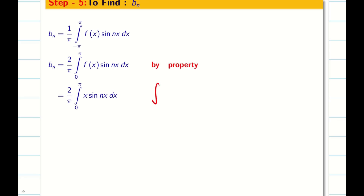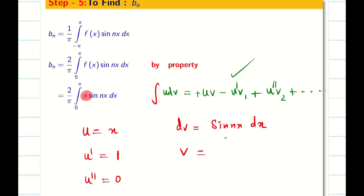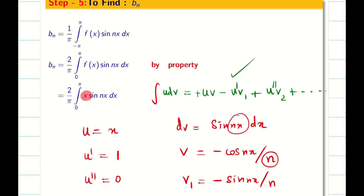Now use Bernoulli's formula: the integral of u dv equals u·v minus u'·v1 plus u''·v2, and so on with alternating signs. Since the power of x is 1, we get two terms. Take u as the diminishing function x, so u' = 1 and u'' = 0. Then dv = sin(nx) dx. The integration of sin(nx) gives v = minus cos(nx)/n, and integrating again gives v1 = minus sin(nx)/n². We have u·v and u'·v1 to connect.